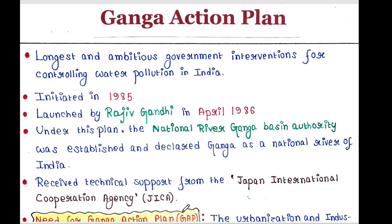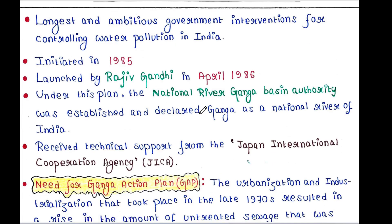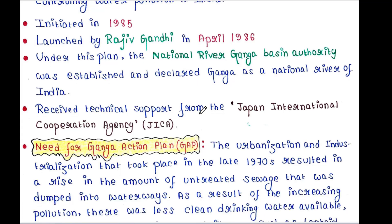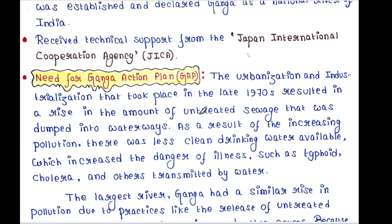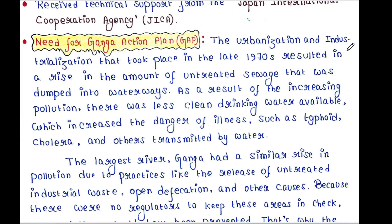They received technical support from the Japan International Cooperation Agency, or JICA. Now let us see the need for this Ganga Action Plan. The urbanization and industrialization that took place in the late 1970s resulted in a rise in the amount of untreated sewage dumped into waterways.